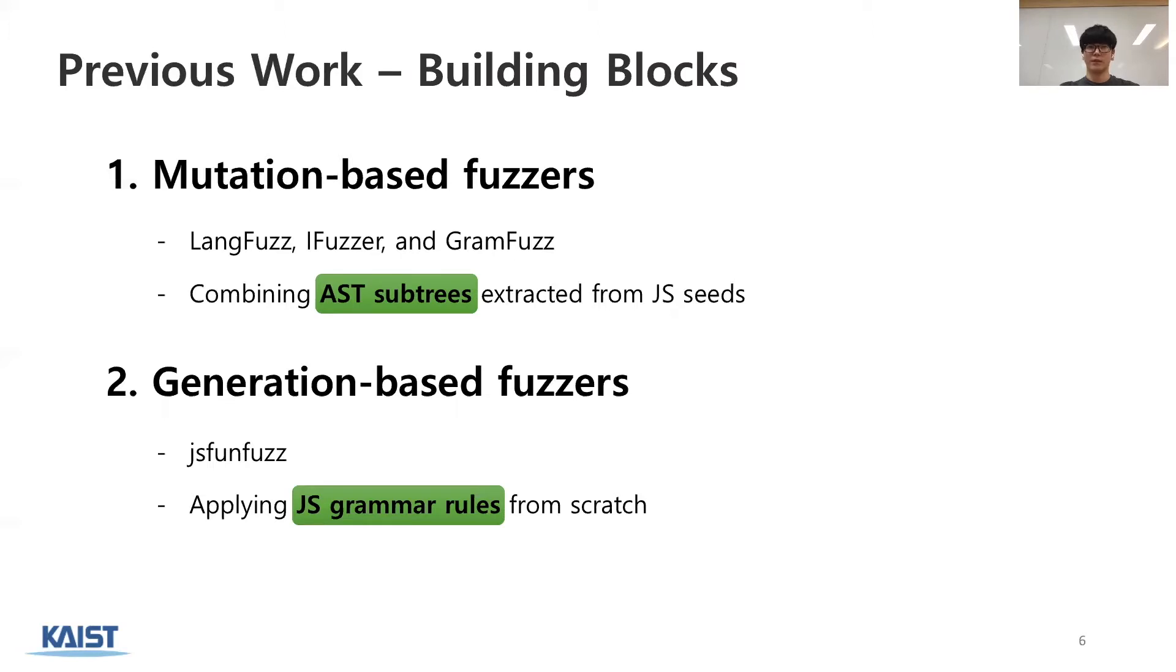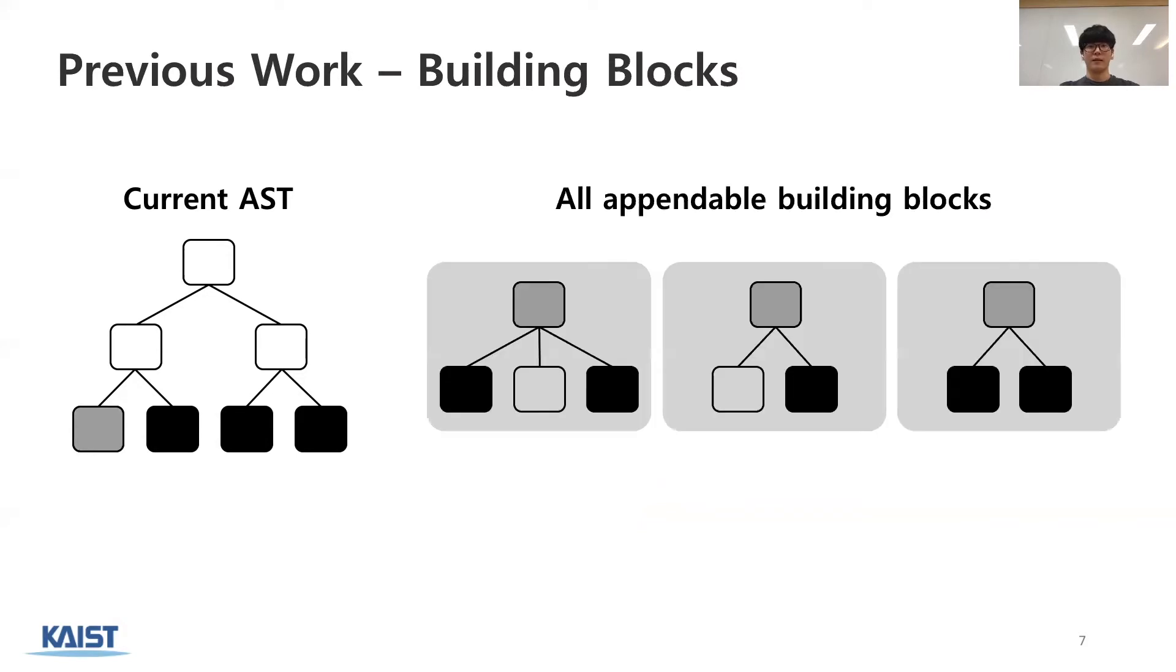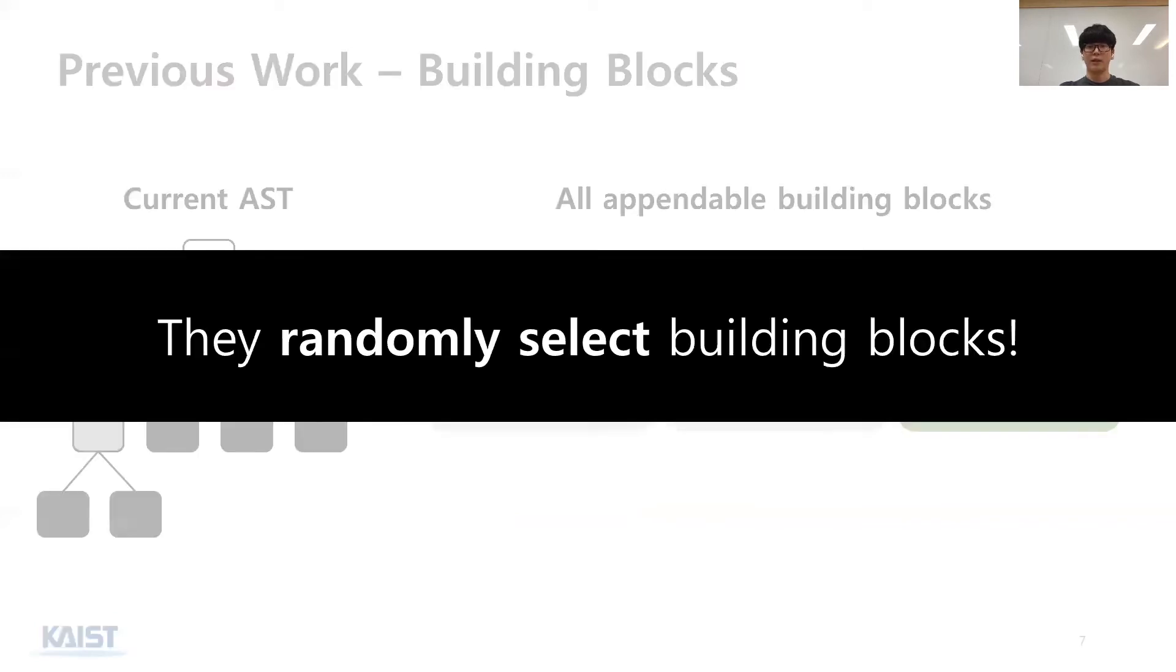However, both of them are basically not that different. They randomly combine AST subtrees or randomly apply JS grammar rules. For example, let's assume this is the current AST. A fuzzer now wants to append a new building block to this node. And it has three building blocks which are appendable to this node. Then, JS fuzzers like LangFuzz or JSFunFuzz simply select one from these candidates and append it to the node. In other words, they randomly select their building blocks as long as JS grammar allows.